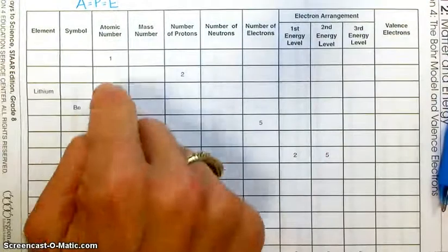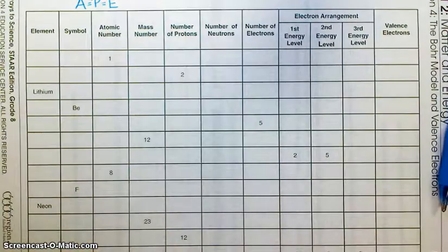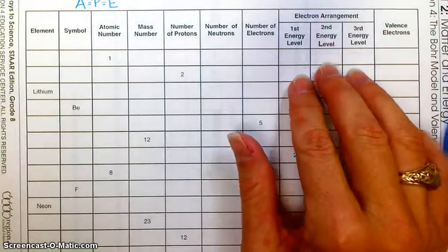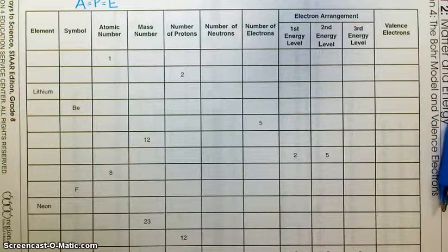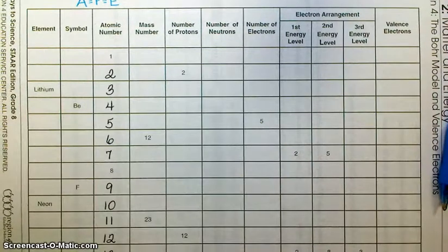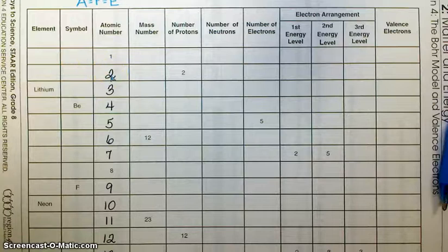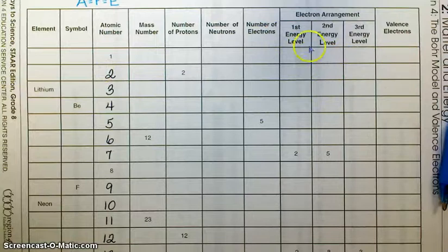This sheet goes in order by atomic number, so we're going to do the first 15 elements. We're going to start figuring out how electrons are arranged into energy levels. If you look at your periodic table, atomic number one is hydrogen with chemical symbol H, and atomic number two is helium with chemical symbol He.